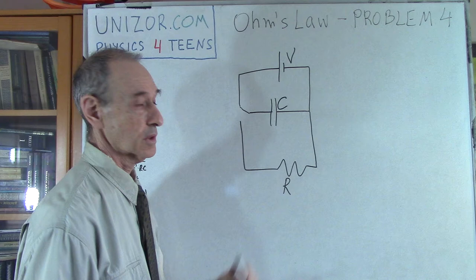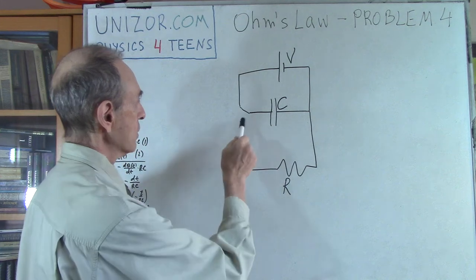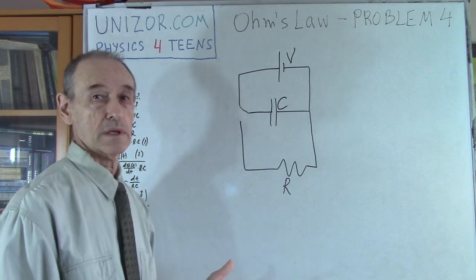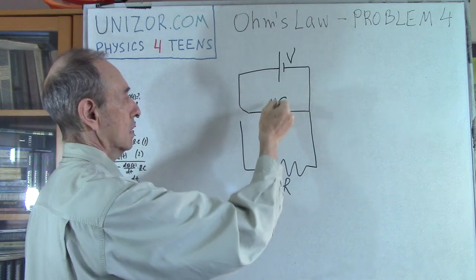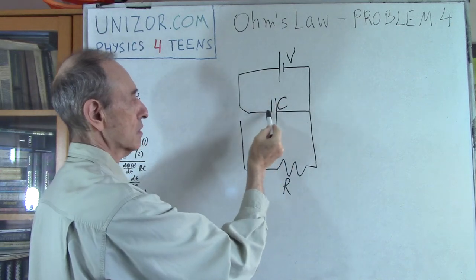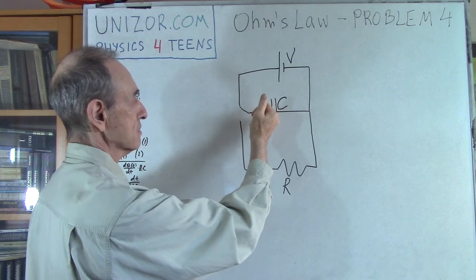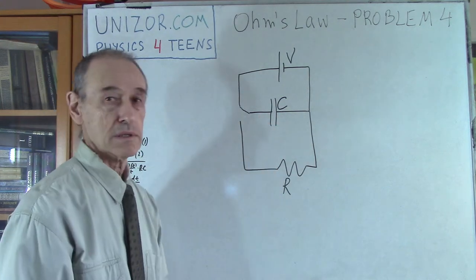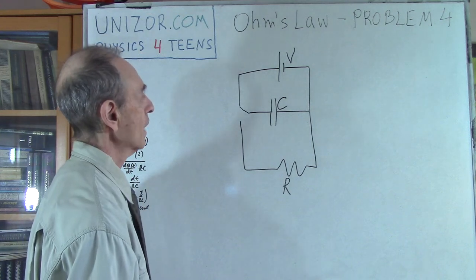Now, my experiment is the following. First, I have this switch in this position. What is basically happening in this particular case? Well, there is a source of energy, so it will basically charge. Plus will be here, minus will be here — there will be excess of electrons on one plate and deficiency of electrons on the other. And the capacitor will be charged to a certain degree.